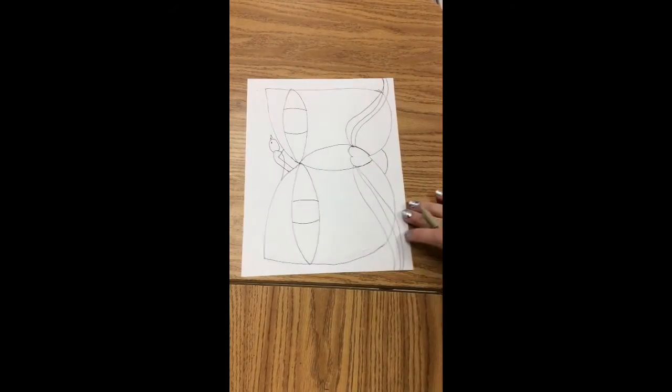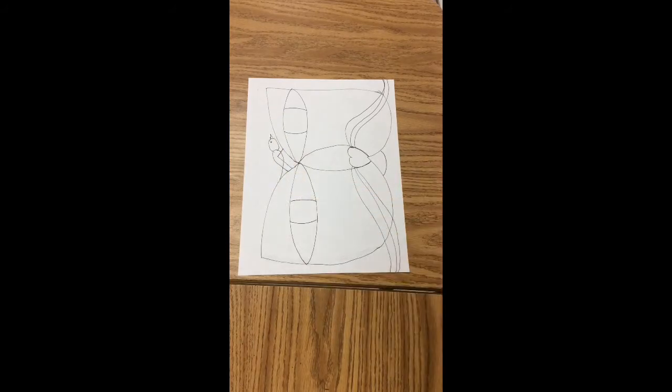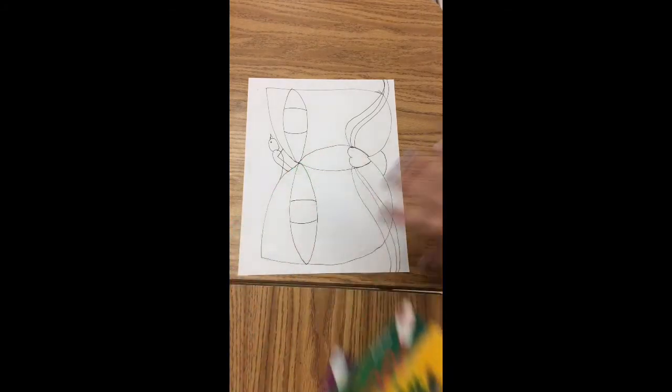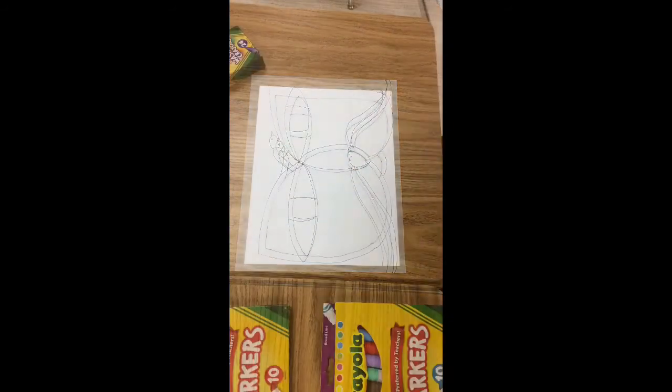Now that we've done this part, I'm going to speed up the video and show you how to color it. We're going to color the whole thing, the cat, the bird, and the background. Here we go.